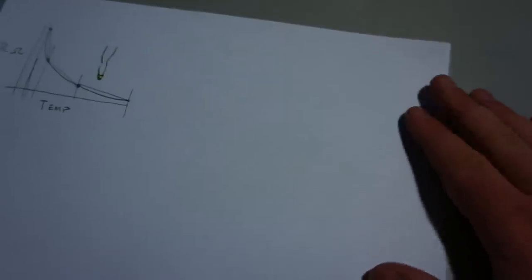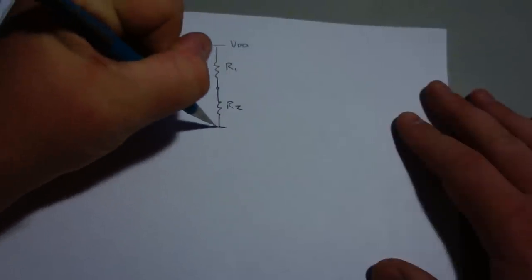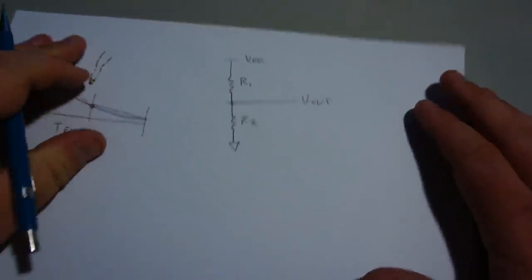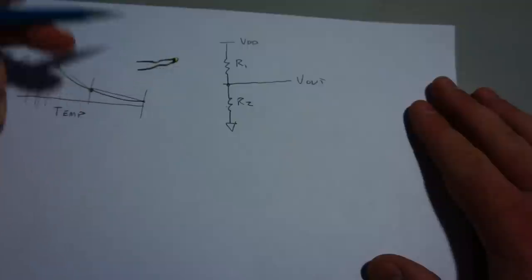Basically, all you got to do is make a voltage divider. And so you have VDD, resistor 1, R2, ground, V out. So what you do is you replace R2 with the thermistor.